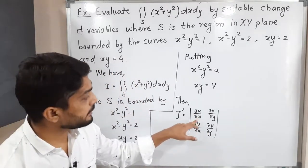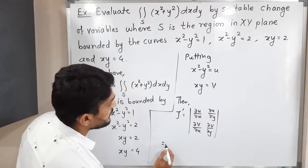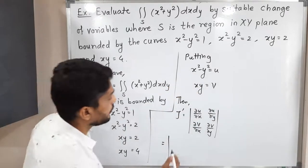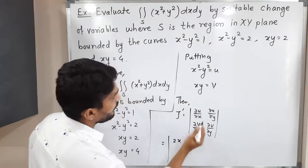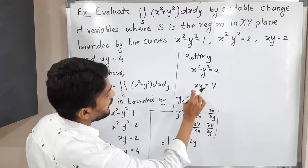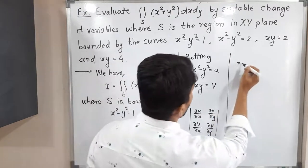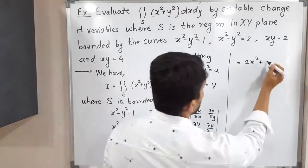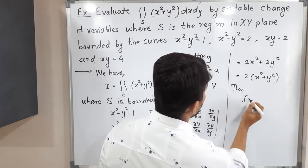So it is easy to find here. ∂u/∂x: derivative of u = x² - y² with respect to x gives 2x. ∂u/∂y: derivative with respect to y gives -2y. ∂v/∂x: with y constant, derivative of xy is y. ∂v/∂y: with x constant, derivative of xy is x. Computing the determinant: (2x)(x) - (-2y)(y) = 2x² + 2y² = 2(x² + y²). So J' = 2(x² + y²).